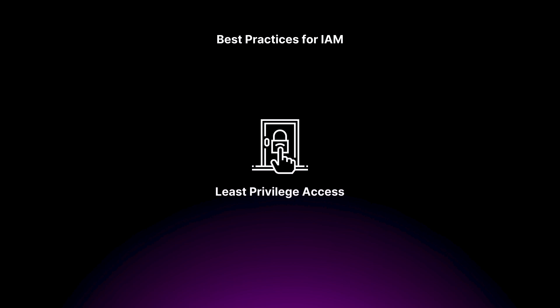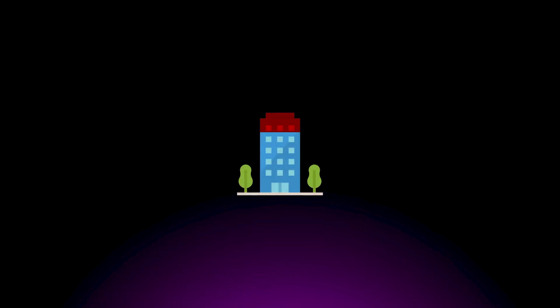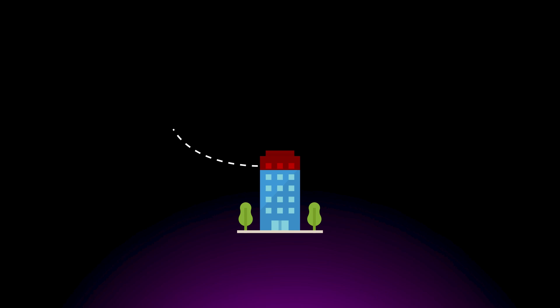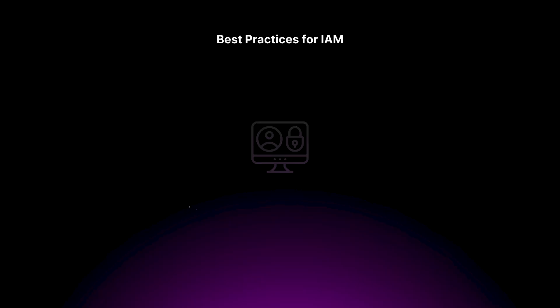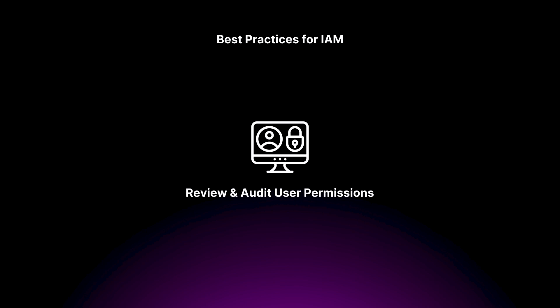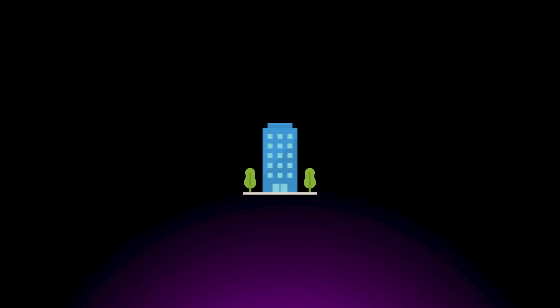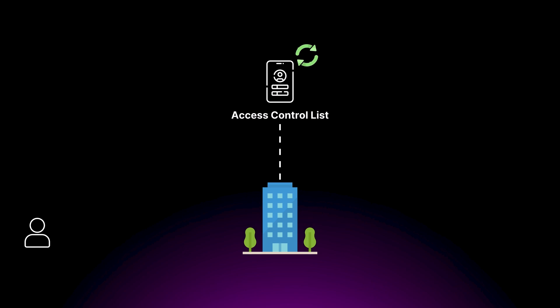Next, you need to implement least privileged access — giving users the minimum level of access they need to do their job and nothing more. It's like having restricted areas in the building; not everyone needs access to the executive suite or the server room. By restricting access to sensitive resources and data, you can minimize the damage if an account is compromised. It's also important to review and audit user permissions often, as people's roles and responsibilities can change over time, and you need to make sure their access levels are adjusted accordingly.